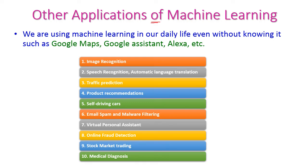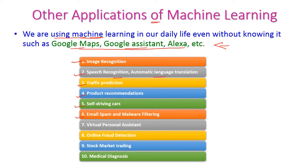There are other applications of machine learning that we use in our day-to-day life without realizing it — for example, Google Maps, Google Assistant, and Alexa. These are implemented because of machine learning algorithms. The applications include: image recognition, speech recognition, automatic language translation, traffic prediction, product recommendation, self-driving cars, email spam and malware filtering, virtual personal assistant, online fraud detection, stock market trading, and medical diagnosis. Let us see all of these one by one.